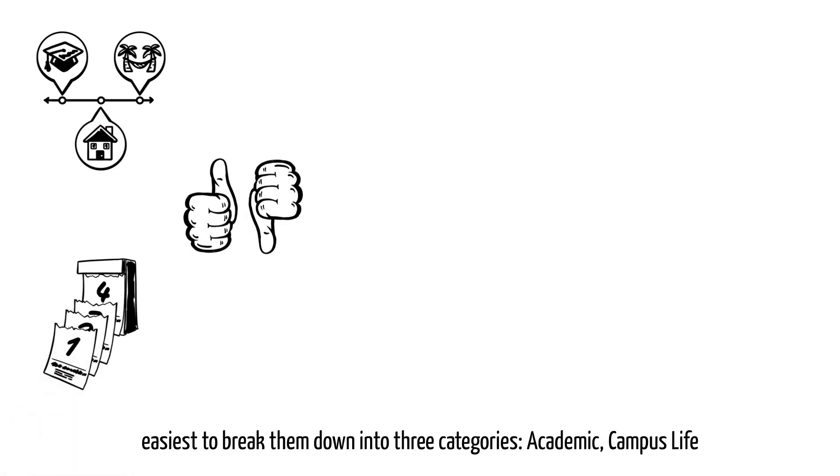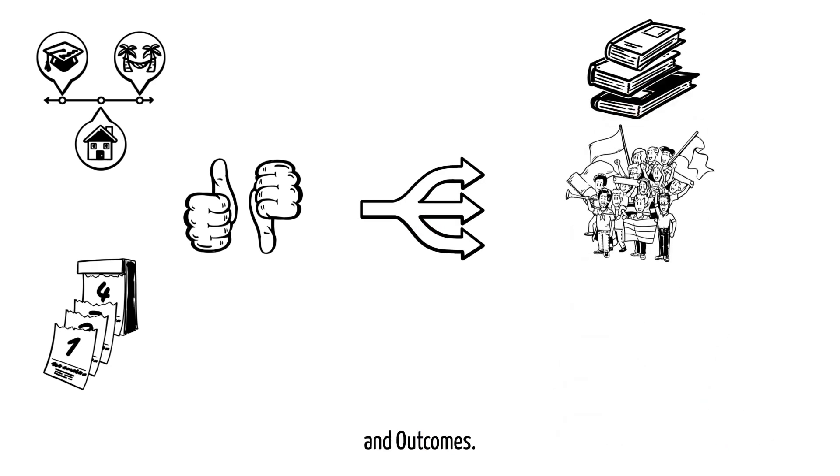So it may be easiest to break them down into three categories: Academic, Campus Life, and Outcomes.